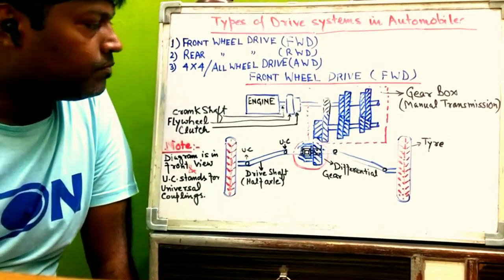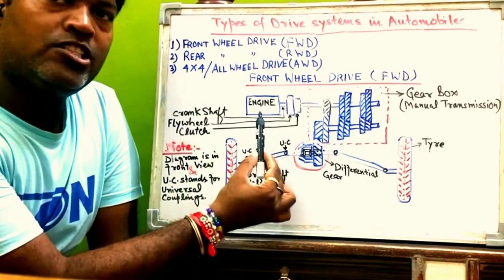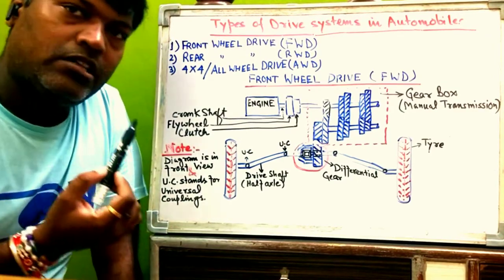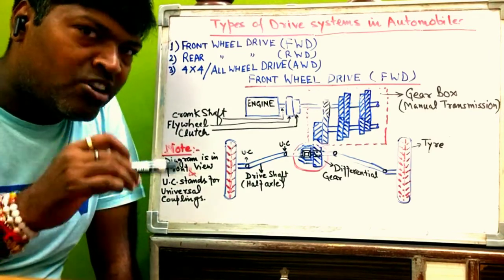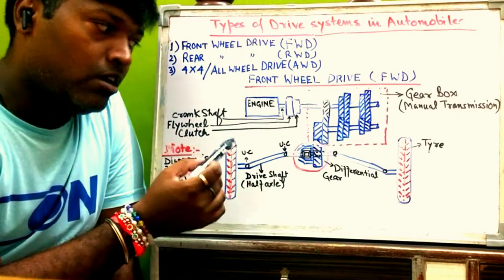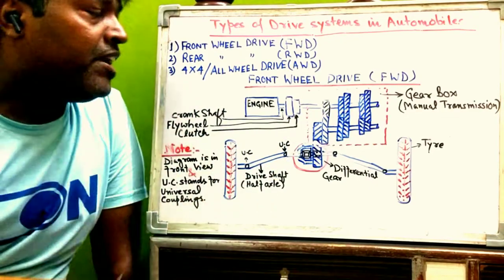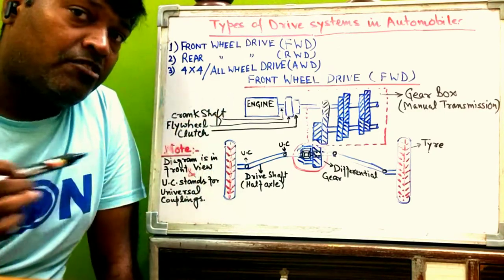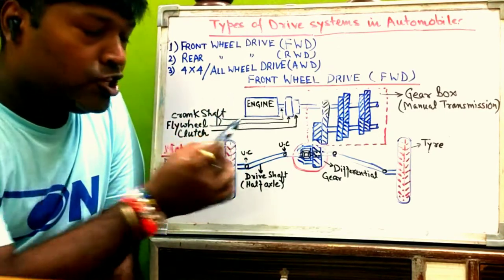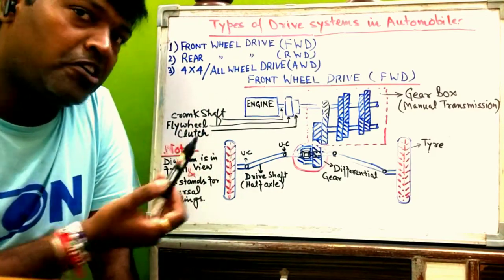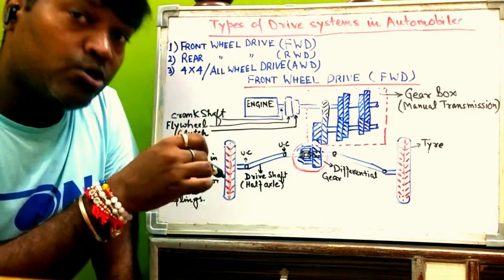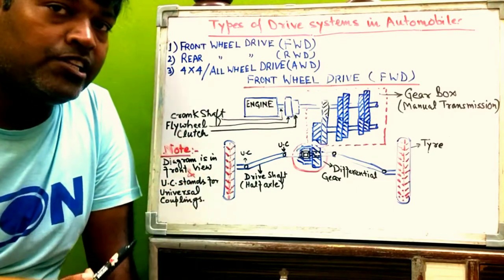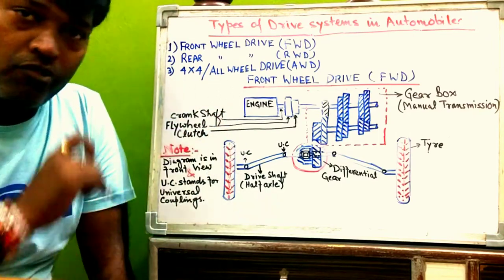The first component is the engine, which is the power plant for any system — it gives the power to drive the vehicle. As the name suggests, front wheel drive means the power of the engine is transmitted to the front wheels only. When power is transmitted to the rear wheels, that is rear wheel drive. When power is transmitted to both front and rear wheels, that is all wheel drive or 4x4.